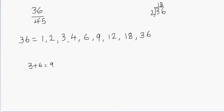Now we're going to find the factors of 45. Obviously 1 is a factor of 45. 2 cannot be a factor of 45 because 45 is not an even number. How about 3? We add the digits: 4 plus 5 gives us 9, and 9 is divisible by 3, so 45 is divisible by 3 — 3 is a factor. 4 is not a factor, because the multiplication table of 4 contains only even numbers.